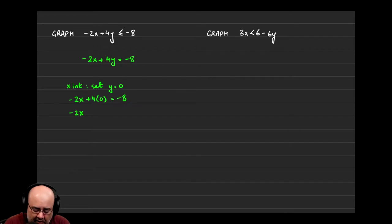So if we do that, we would get -2x + 4(0) = -8. -2x, 4 times 0 is just 0, so that's gone. That's why we did it. Equals -8. Then finally, dividing both sides by -2 will give us 4. So one point that this line passes through is (4, 0).